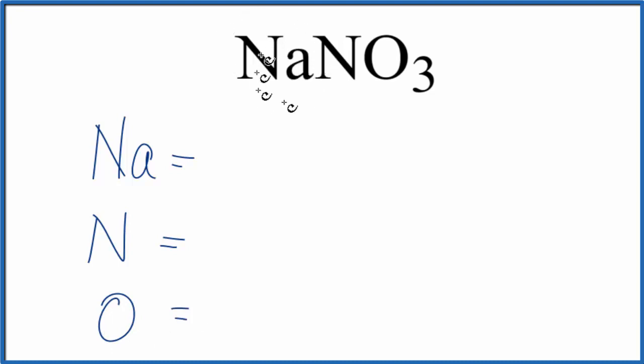So for the Na, there's no subscript written, but we assume there to be a 1 right there. So we have one atom of sodium. Same for the nitrogen, nothing written, subscript 1. So we have 1 atom of nitrogen, and our 3 here tells us we have 3 oxygens.